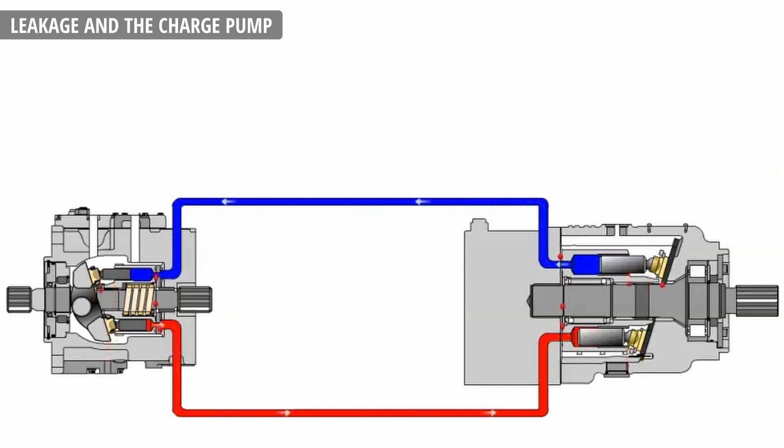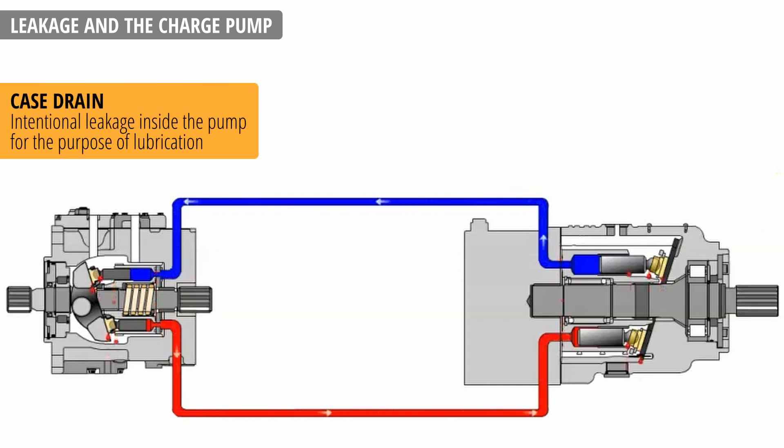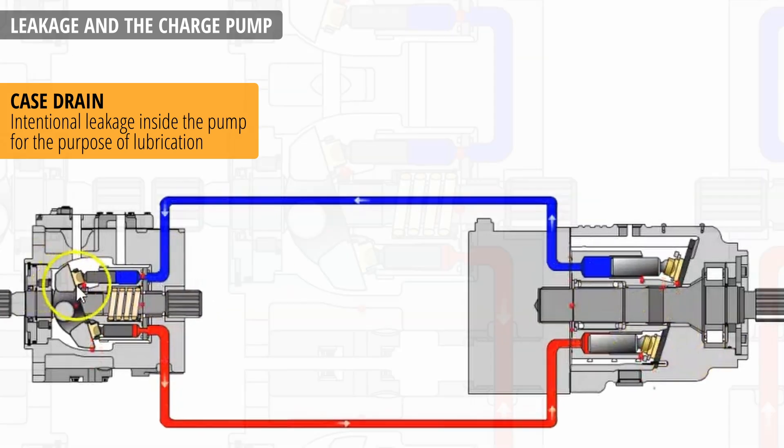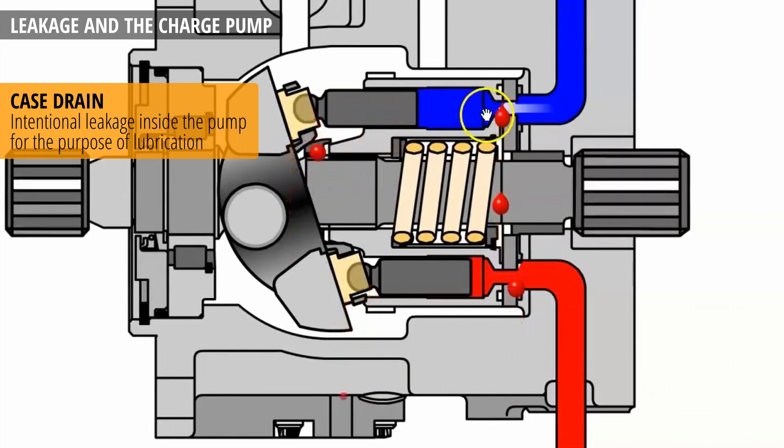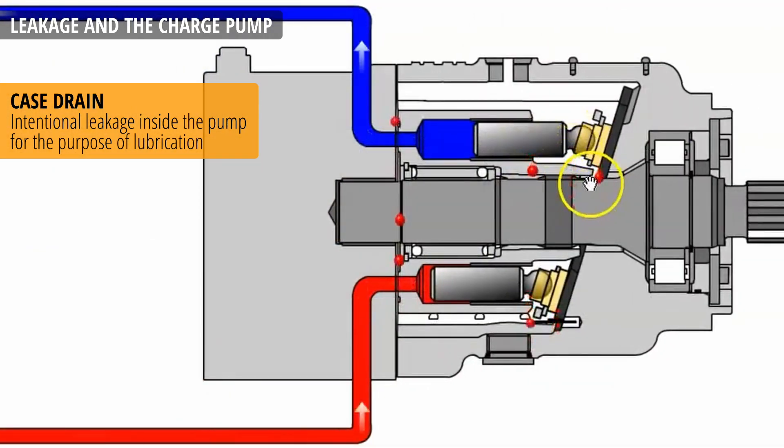In axial piston pump there are leakages, which are there intentionally, because the pump is using a medium it pumps to lubricate itself in the process. That is called a case drain, because the oil is draining into the casing of the pump. It happens in the motor as well.